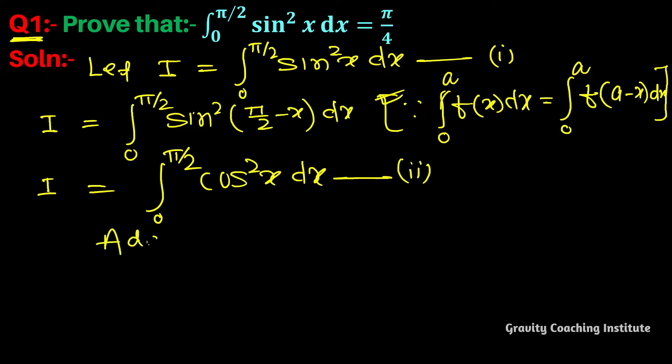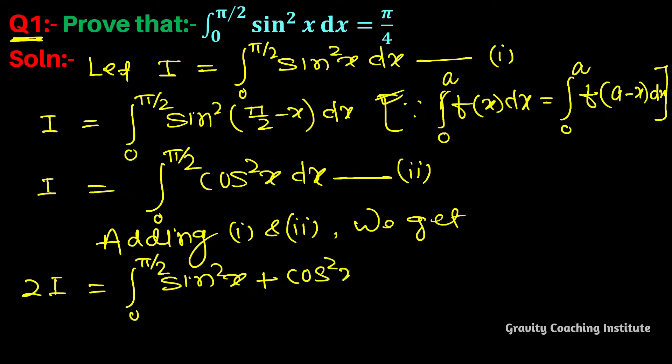Now, adding equation 1 and 2, we get 2I equal to integral 0 to pi by 2 (sin square x plus cos square x) dx.